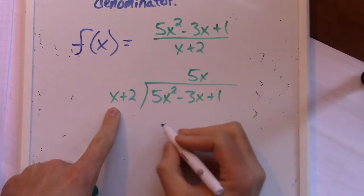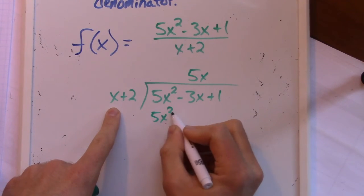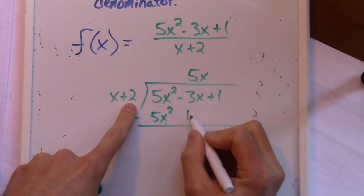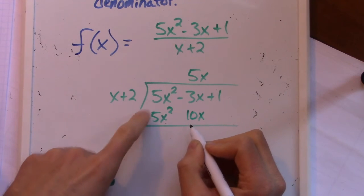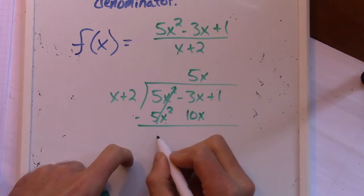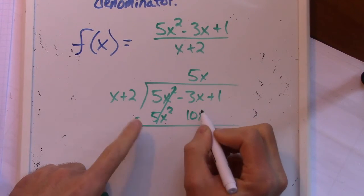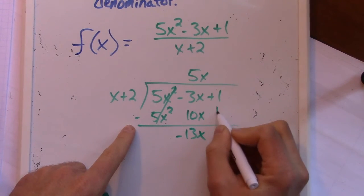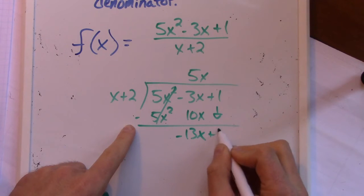5x times x is 5x squared. It does match, and when I subtract it, it'll cancel. 5x times 2 is gonna be 10x, right? And this, so this cancels its 0x squared. Negative 3x minus 10x is gonna be negative 13x. And then this comes down, plus 1.